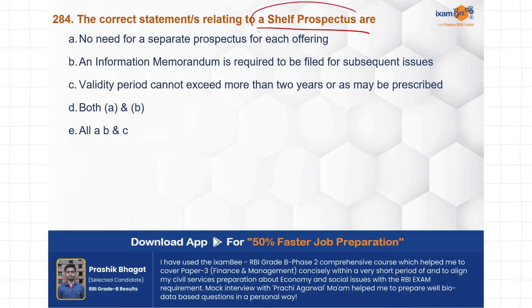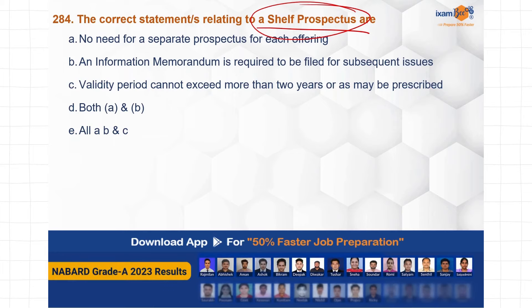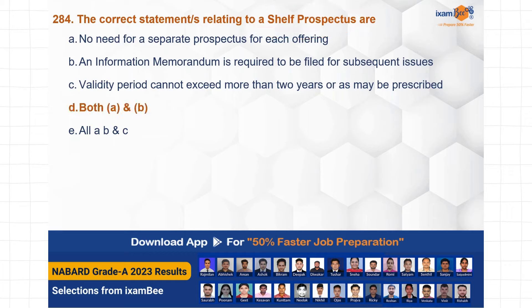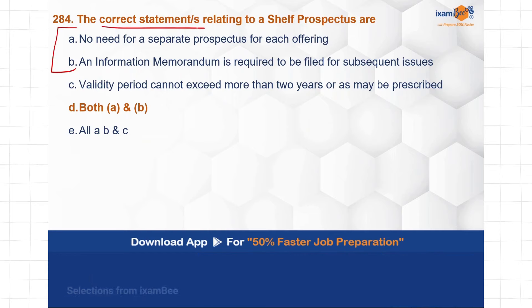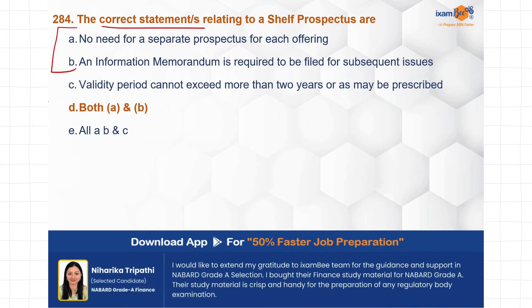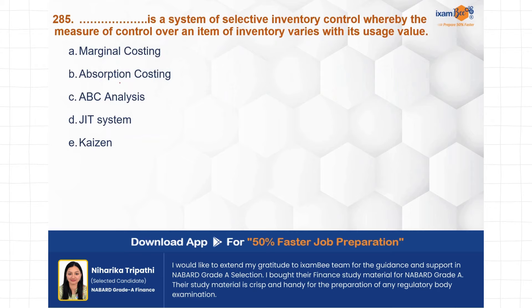Next question on correct statements relating to shelf prospectus: (A) no need for a separate prospectus for each offering, (B) an information memorandum is required to be filed for subsequent issues, (C) validity period cannot exceed more than two years or as may be prescribed. The correct answer is both A and B — option D. Statements A and B are correct.